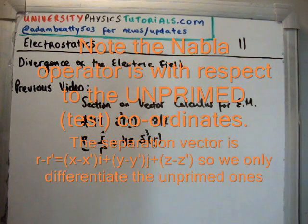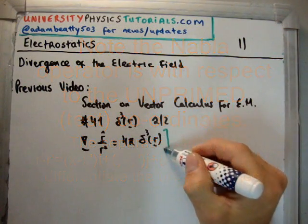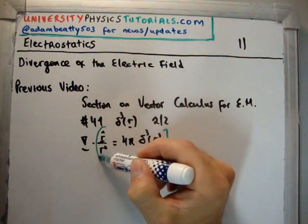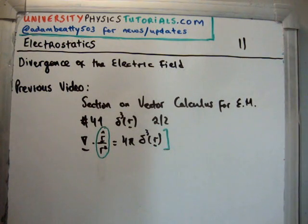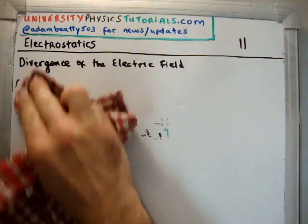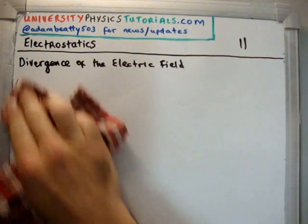The result I'm going to use from that video is the following: the divergence of this particular vector field, r hat divided by r squared, is 4π times the 3-dimensional Dirac delta function. And we're going to need that in order to talk about the divergence of the electric field.